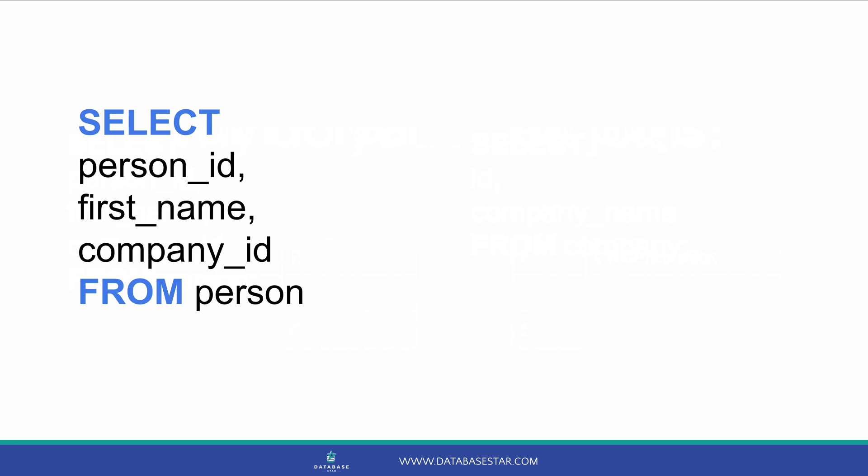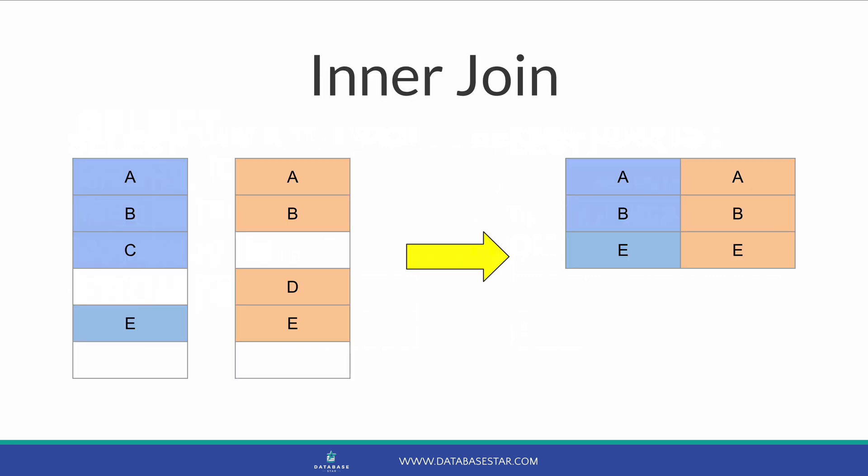There are a few different types of joins we can use in SQL. The differences are in how they handle data found in one table but not the other. The first type is called an inner join. An inner join lets you relate records between two tables and returns records where there is a match in both tables. If there is a record in one table without a match in the other, it's not shown in the results. For example, if a person has no company ID record, they won't be shown, and if a company has no person records, it won't be shown either. We'll only see records that match.